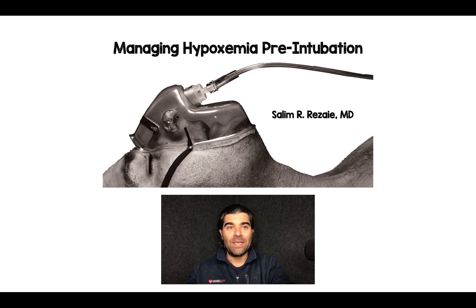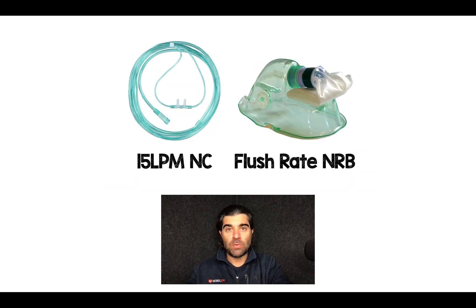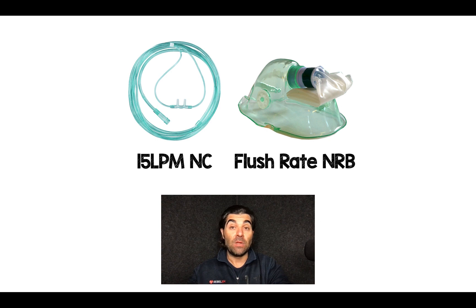Salim Rezaia here, and I want to talk about managing hypoxemia pre-intubation. For me, this is pretty straightforward. Almost every patient I'm going to intubate gets two things right off the bat: 15 liters per minute of nasal cannula and flush rate non-rebreather. I do this right at the very beginning as I'm getting all my RSI medications ready.